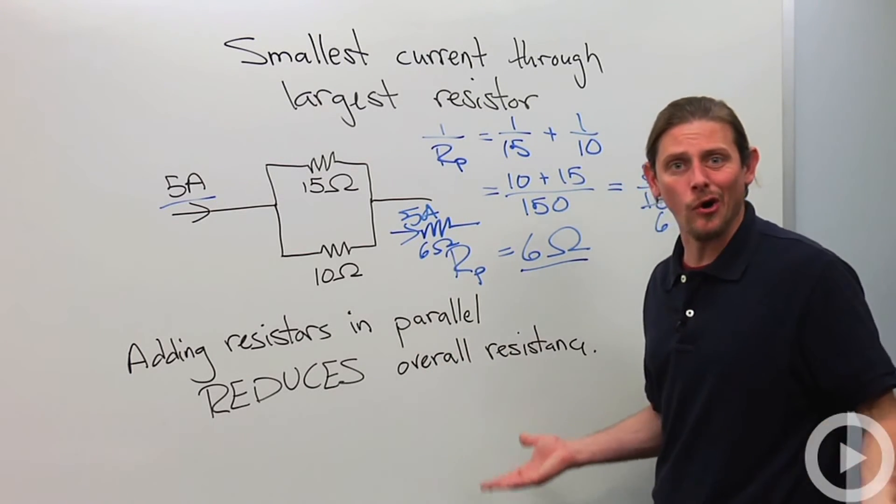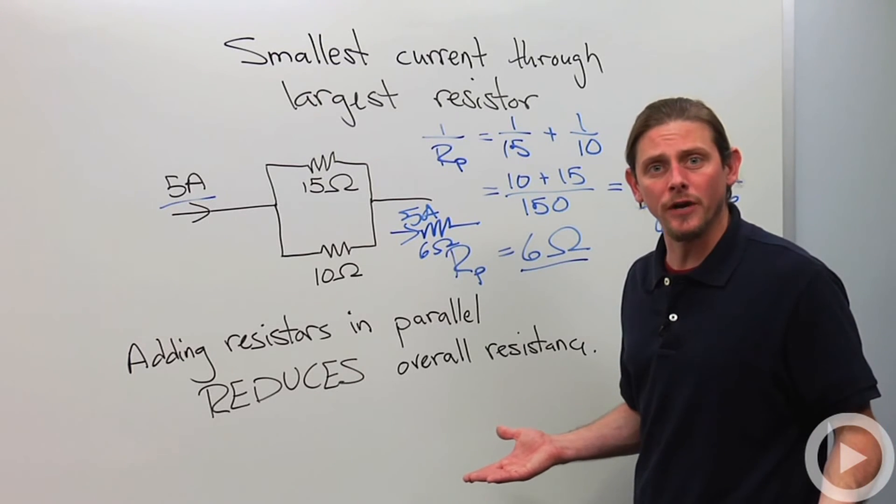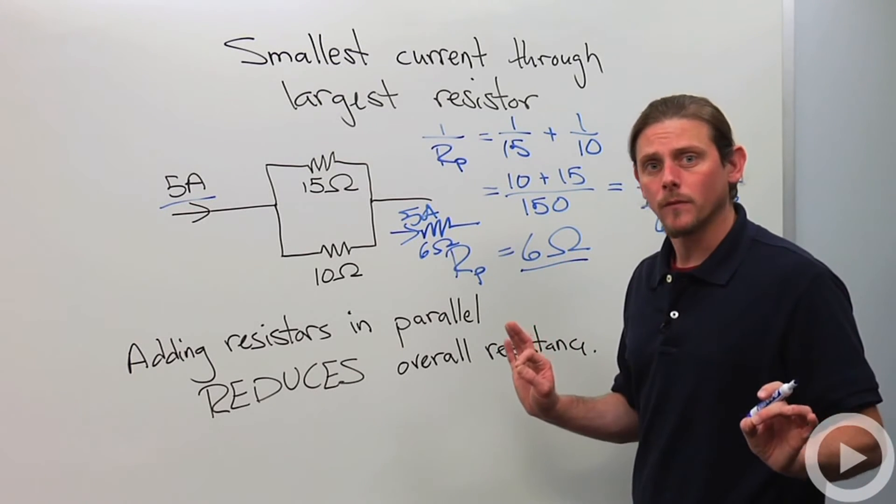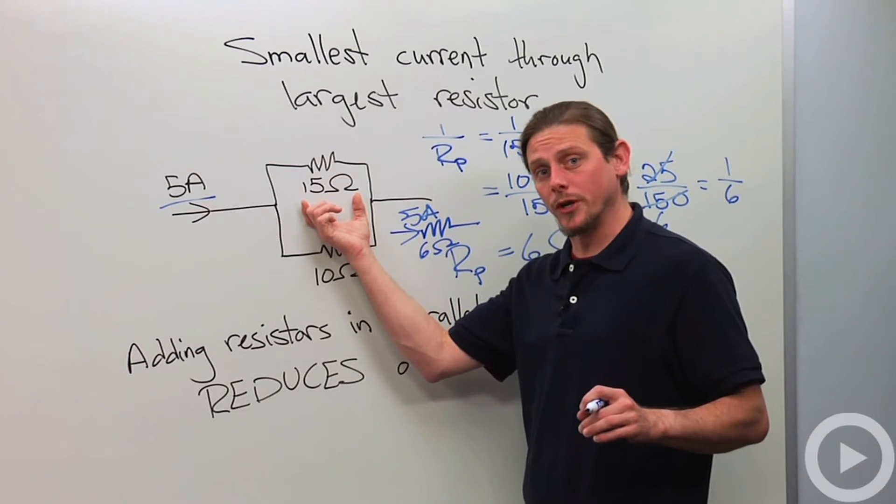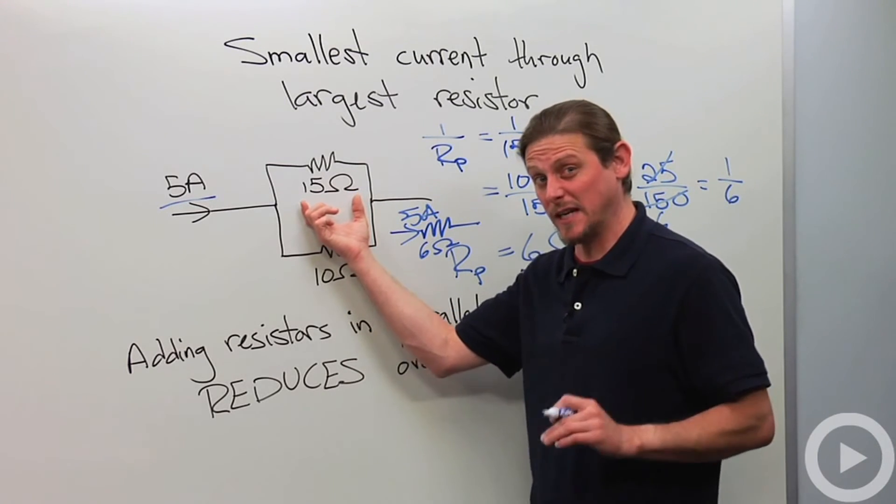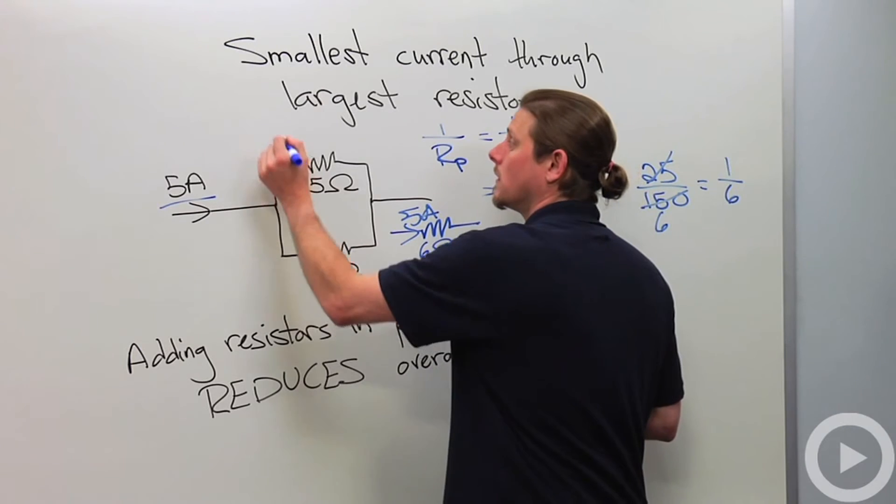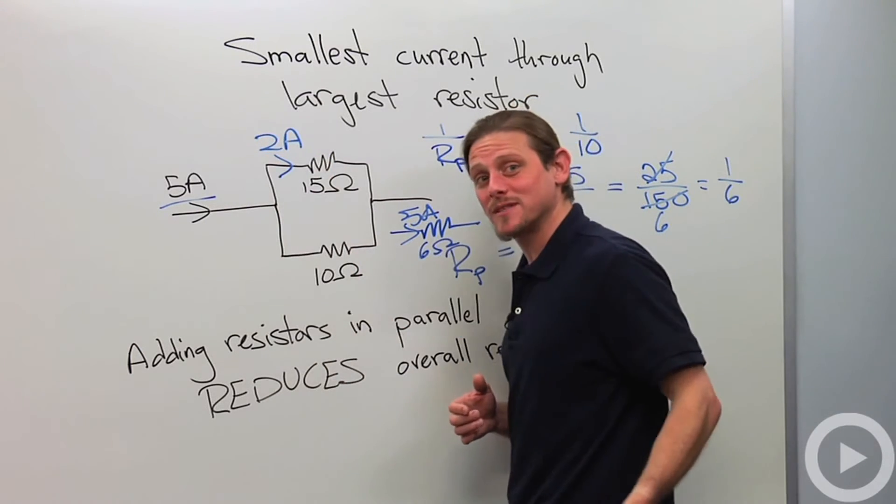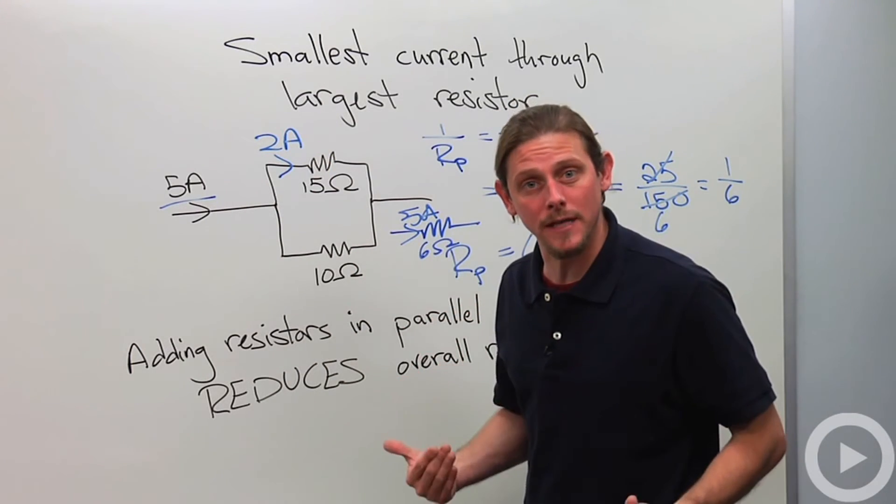5 times 6 is 30. So that means the potential difference got to be 30. In order to make a potential difference of 30 volts across a 15 ohm resistor, 2 amps because 2 times 15 is 30.